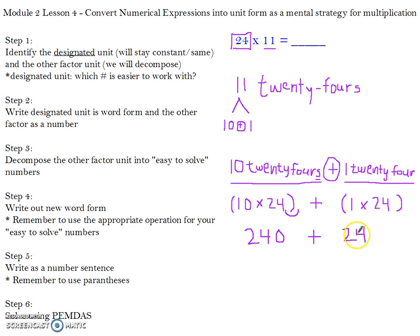Now I just have these two numbers to add. To make it easier, I can move that down here and line up my place values. So I have 0 plus 4, 4 plus 2, and 2 plus 0. So I know that 24 times 11 is 264.